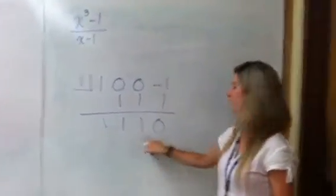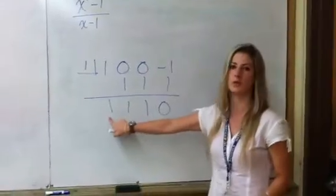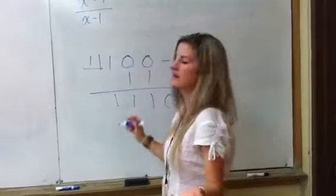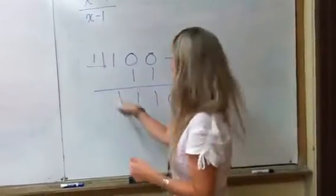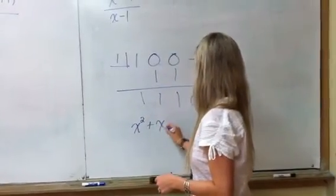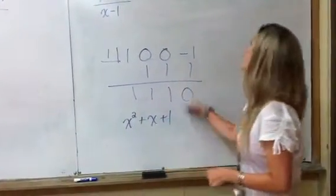So again, remainder, constant, x term, x squared term. And then if we had more, like if this were longer and we had more, if we were doing like x to the fifth minus 1, we'd have more here.